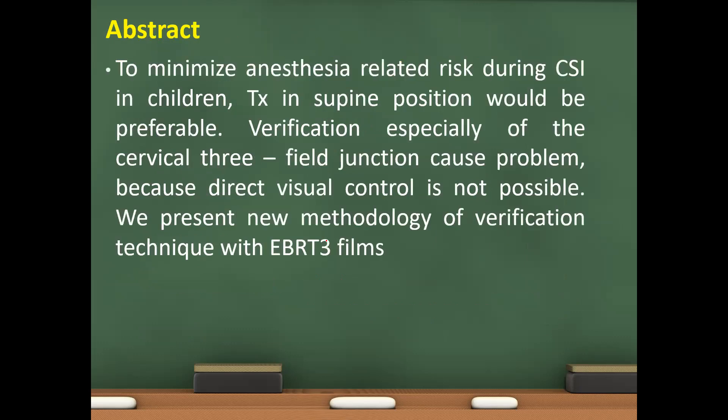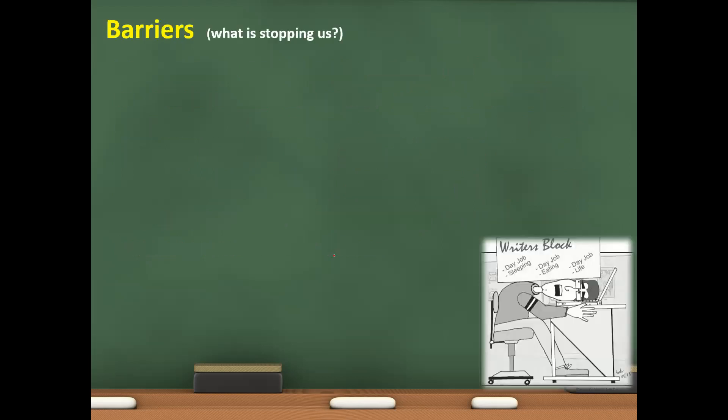So, main headings usually are these. Or you can write an abstract. So, abstract would be: to minimize anesthesia related risk during the CSI in children, treatment in supine position would be preferable. Verification especially of the cervical three field junction cause problem because direct visual control is not possible. So, we present a new methodology of verification technique with EBT three plan.